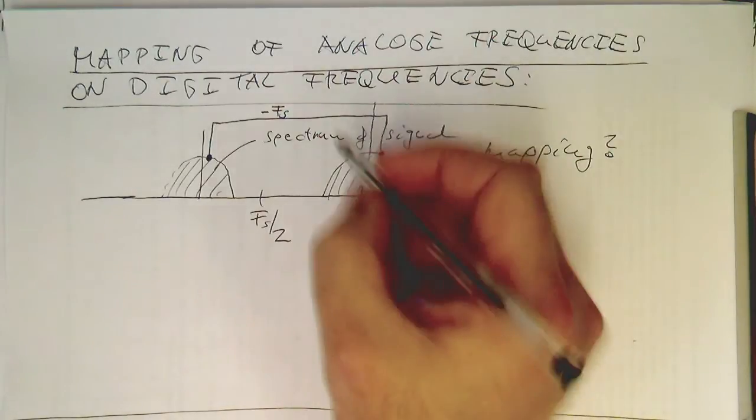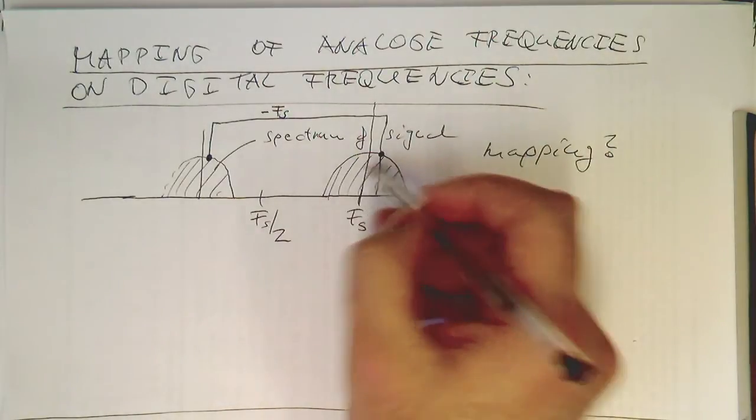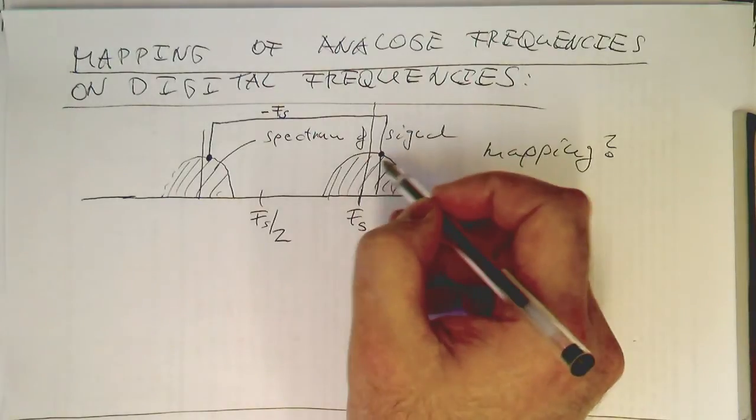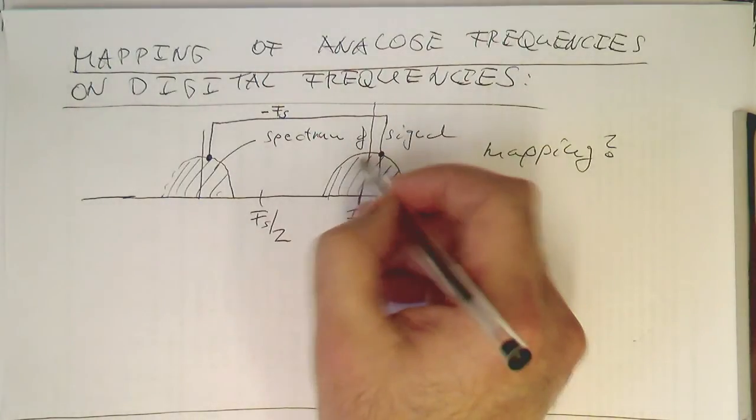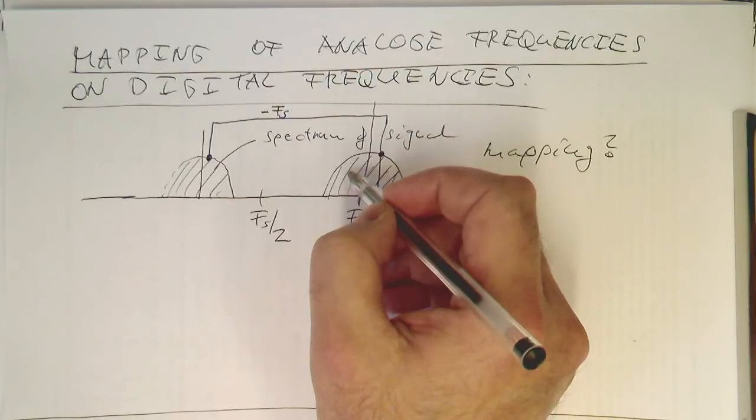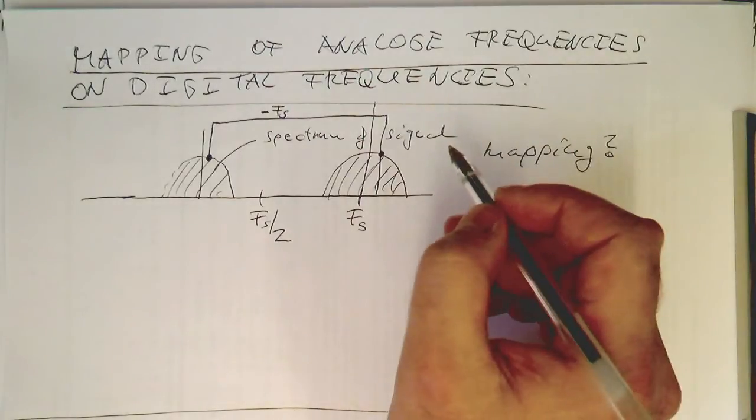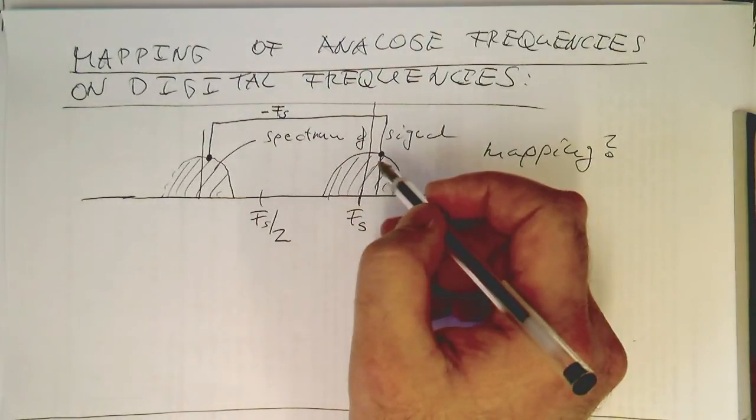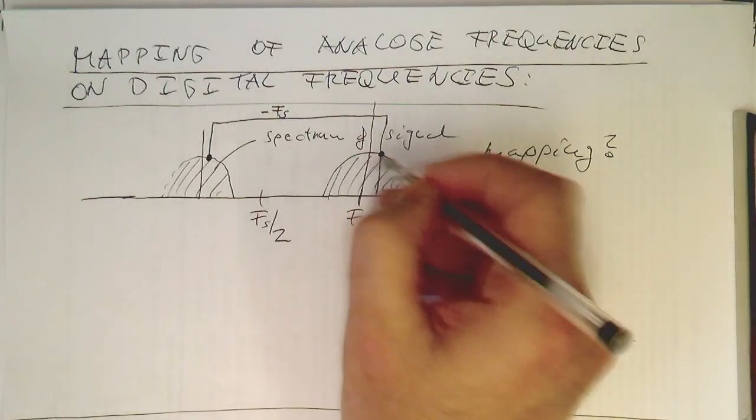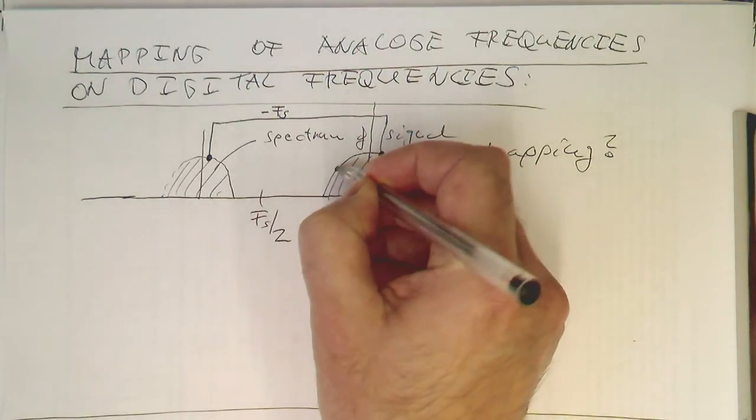So now, if we go to the other side of the spectrum, imagine we have frequencies sitting here, then this mapping is going to be a bit more tricky. So imagine we have a frequency here.